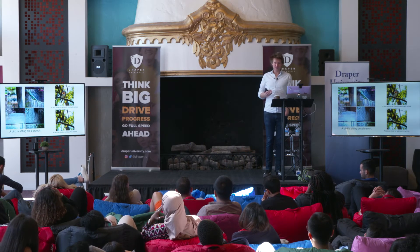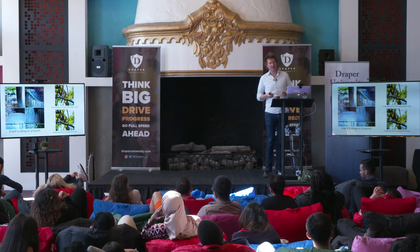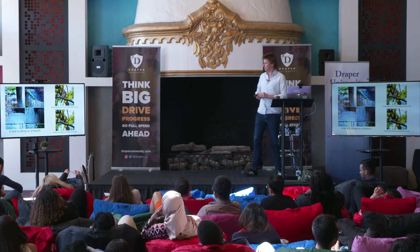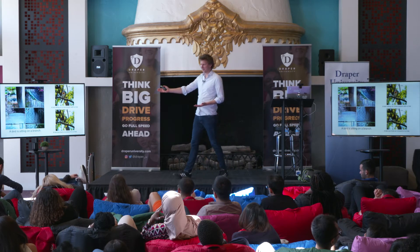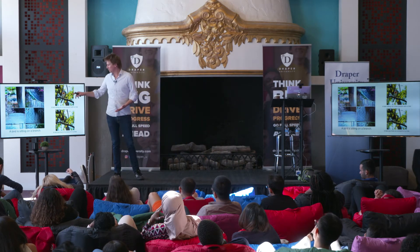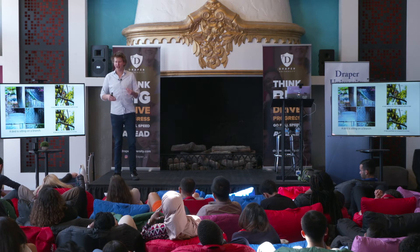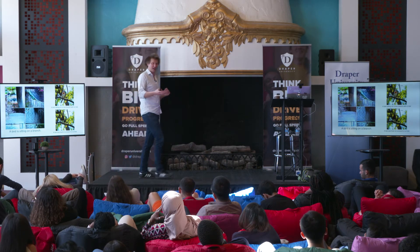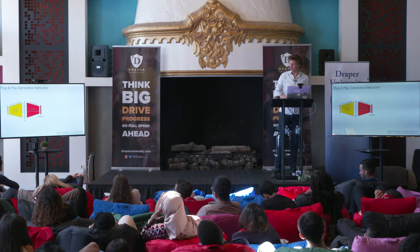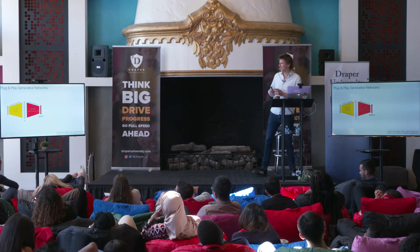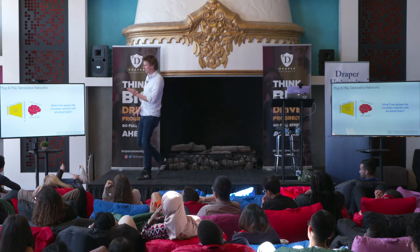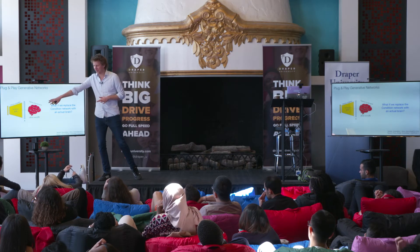Going back to a question from the very beginning: do biases creep into these models? Absolutely — both the types of insidious biases that we'd really like to avoid in the world, but also really weird subtle biases like this birds-and-tree-branches example. If you never teach the model that birds and trees and branches aren't the same thing, it might accidentally learn that they're kind of the same thing.